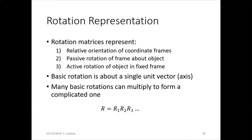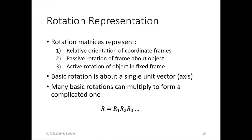Basic rotation is around a single unit vector or axis, but many basic rotations can be multiplied together to form a more complicated one. So you could rotate around x, then around y, then around z, and if you multiply all those together you get a final resulting rotation matrix.